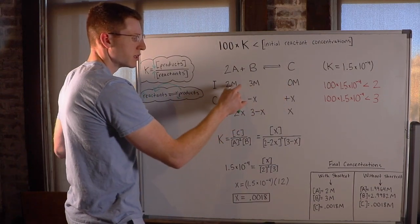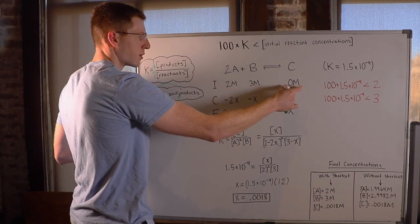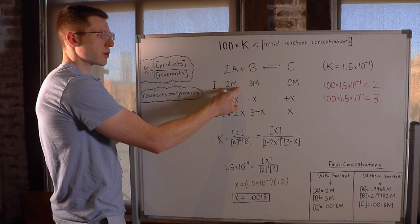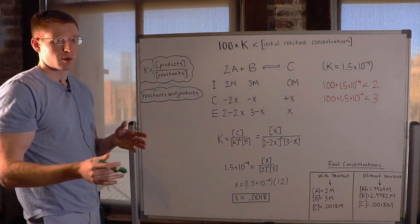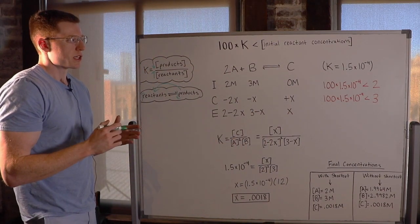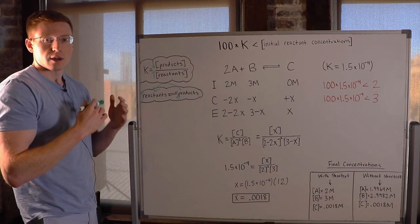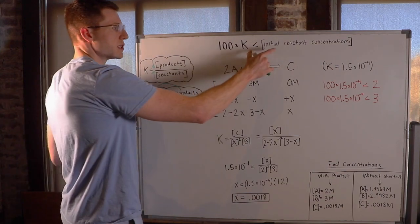In the I row, you can see the initial concentrations of each chemical. A started out at 2 molar, B started out at 3 molar, and C started out with 0 molar concentration. So to test if the shortcut rule applies, we already have all the information we need. We just need to test this.